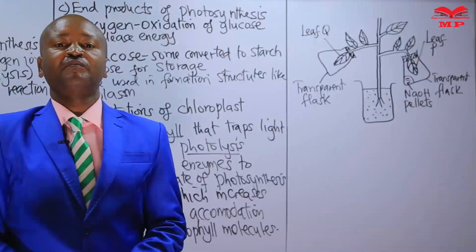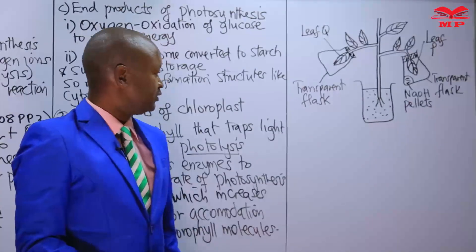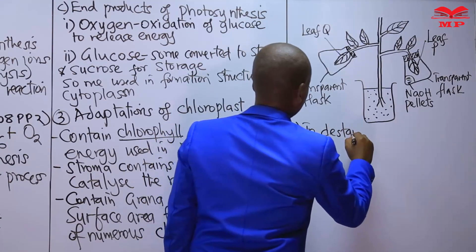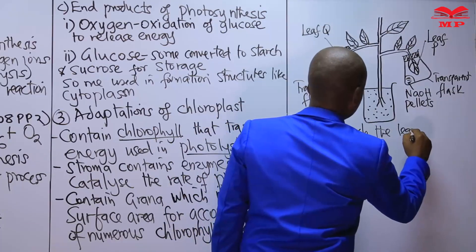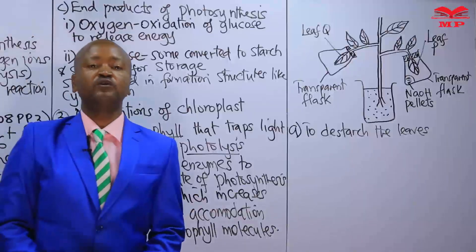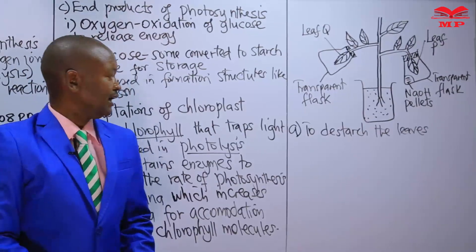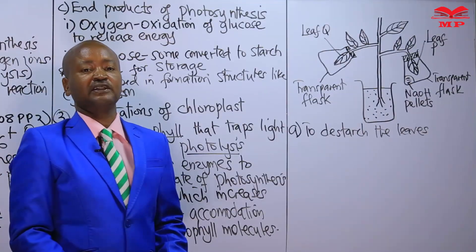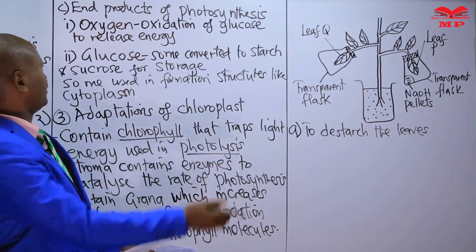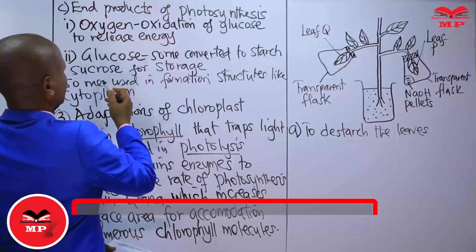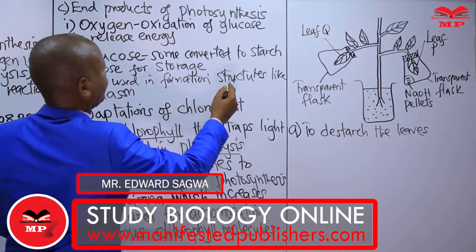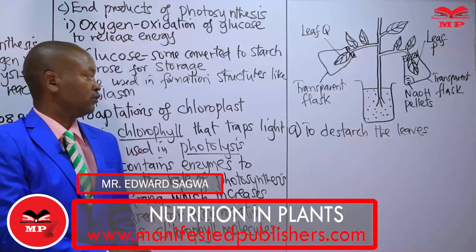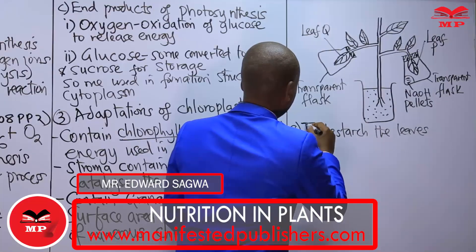This was done before the experiment was set up, and the reason was to destarch the leaves. During the day, the plant undergoes photosynthesis and what is produced is glucose. Some of it is converted to starch for storage. During the night, that starch is converted back into glucose. So, the leaves are destarched.